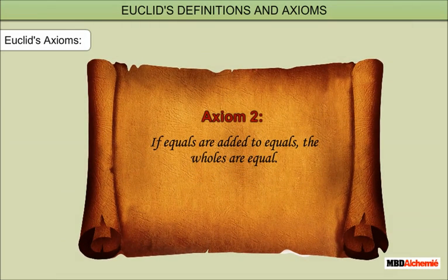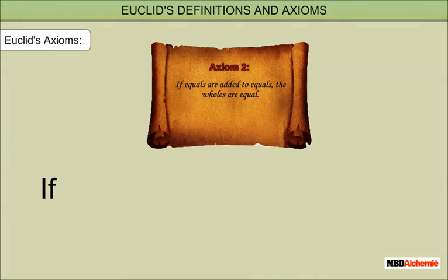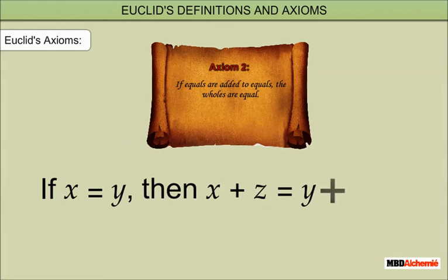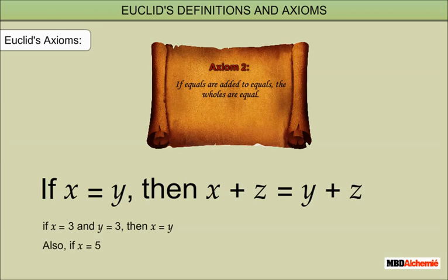Axiom 2: If equals are added to equals, the wholes are equal. That is, if x is equal to y, then x plus z is equal to y plus z. Example: if x is equal to 3 and y is equal to 3, then x is equal to y. Also, x plus 5 is equal to y plus 5.